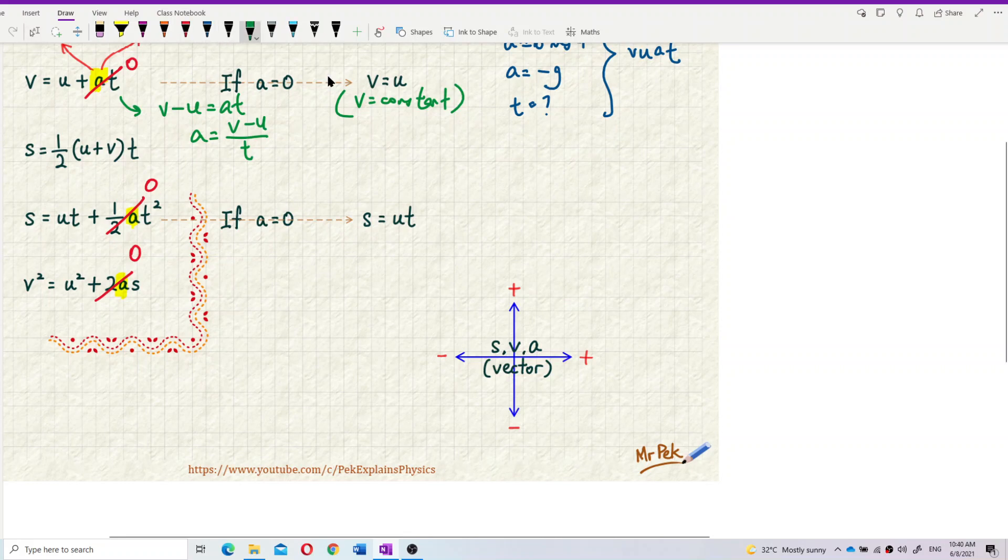Then you need to put velocity positive. If the ball is thrown downward, the ball is thrown downward, you need to put velocity negative.